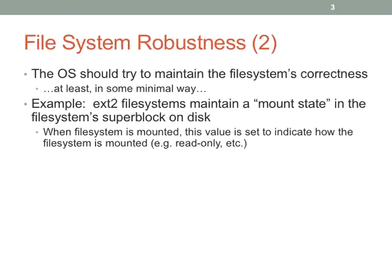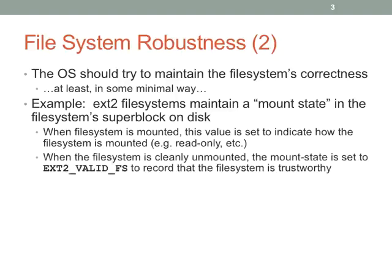ext2 has a mount state value in the superblock on the disk. The superblock is the starting point — like an ELF header saying this is all the stuff on the ext2 partition. That mount state value indicates the state of the file system. When you unmount the drive, that state is set to EXT2_VALID_FS, meaning everything finished, buffers were flushed, and the file system is in a valid clean state.